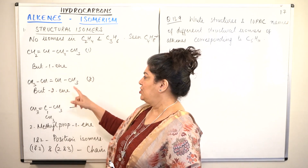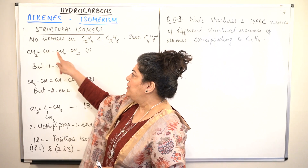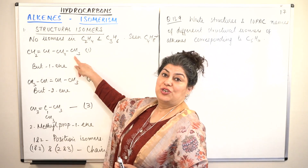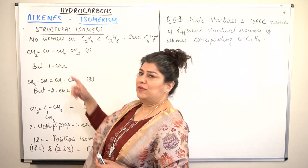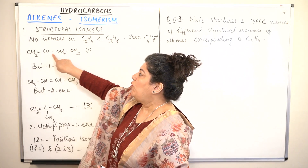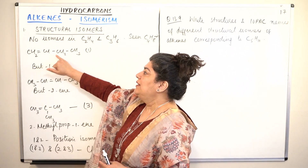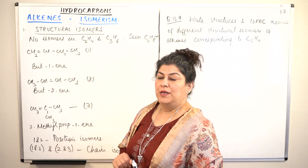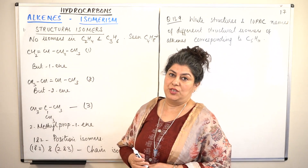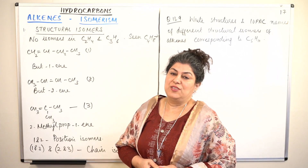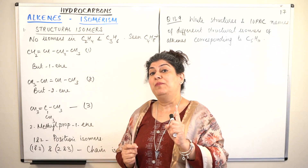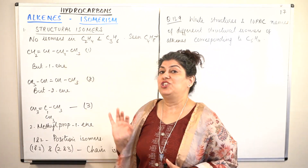Always check from the other direction — does it give you the same structure? If the double bond were between the third and fourth carbons, I would count from that direction and the compound would still be called but-1-ene. So the only other valid position for the double bond is between carbon 2 and carbon 3, giving but-2-ene. This type of structural isomer, where the position of a multiple bond or group is different, is known as position isomerism.